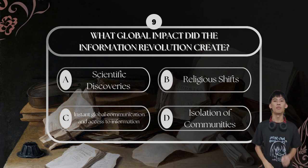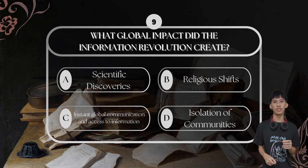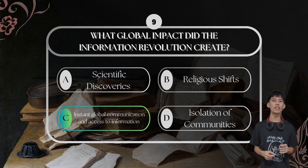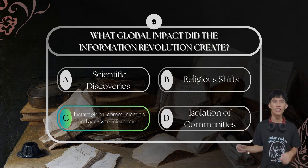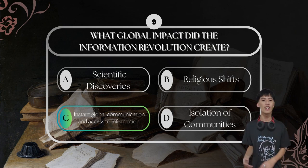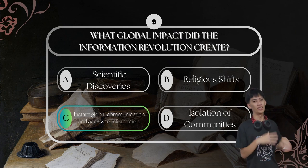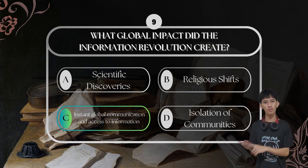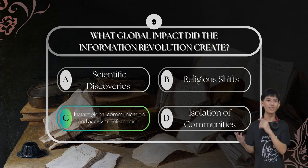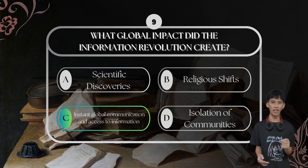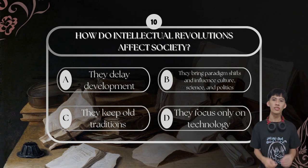For question number nine: what dual impact did the Information Revolution create? The answer is instant global communication and access to information. The Information Revolution made it possible to share knowledge and connect with others across the world in seconds. This has influenced everything from education and business to culture and politics, giving rise to a more globalized and fast-paced society.